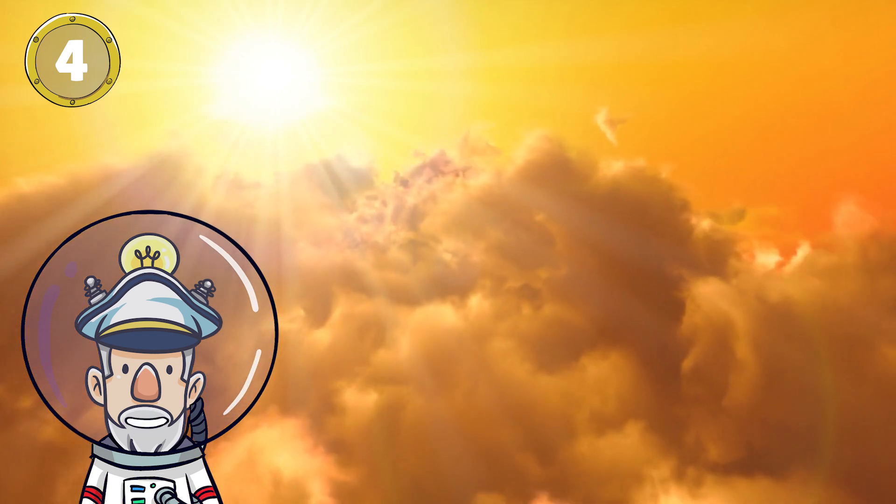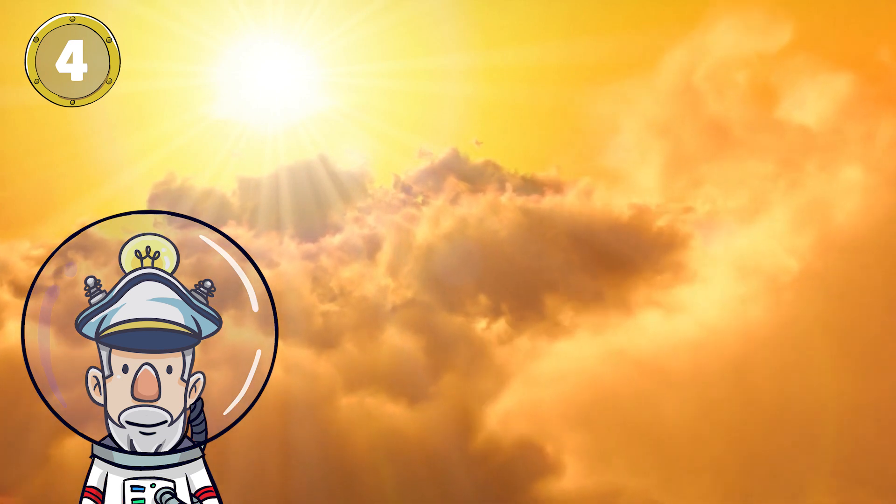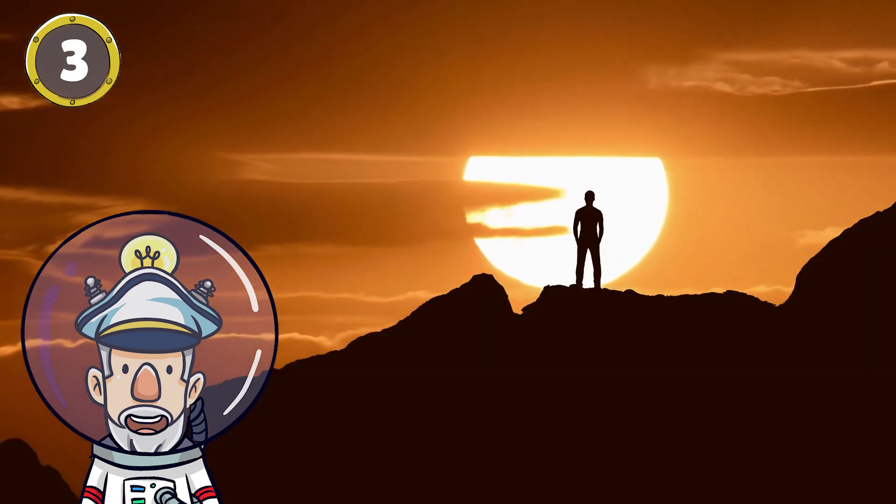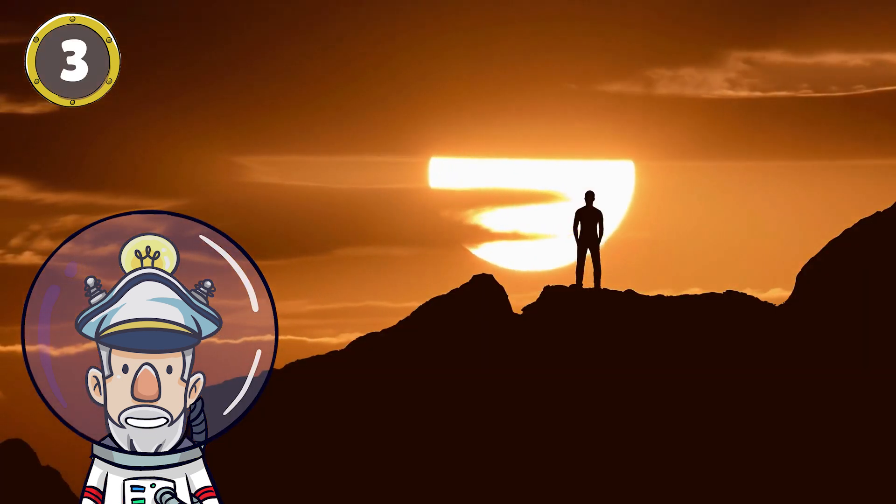The Sun is a main-sequence G2V star or yellow dwarf. Number 3: Light from the Sun takes 8 minutes to reach Earth.